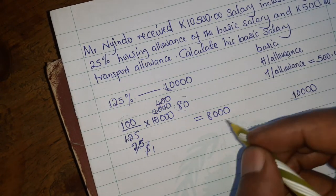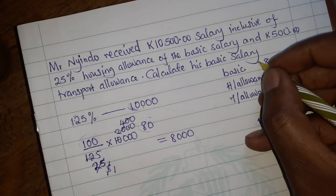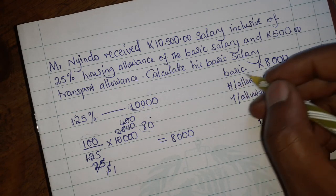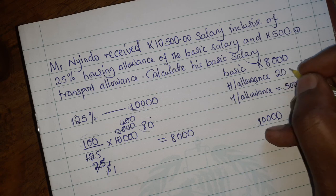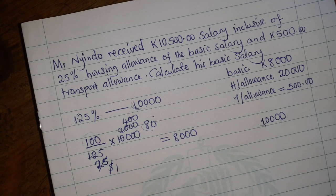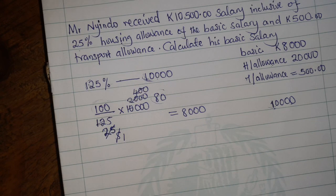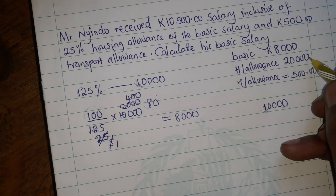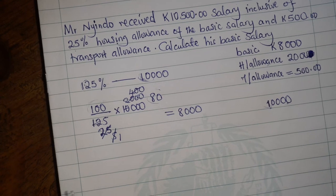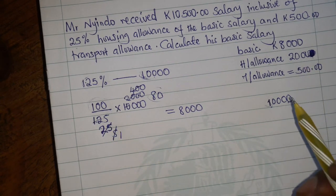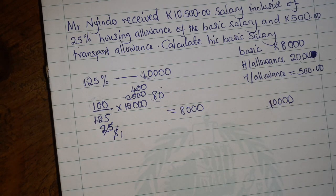This 8,000 is the basic salary. If you wanted to know the housing allowance, you simply subtract: 10,000 minus 8,000 gives 2,000. There is another method, but this one is simpler — it directly gives us the basic salary. The other method would first give us the housing allowance, and then we would subtract from 10,000 to get the basic salary.